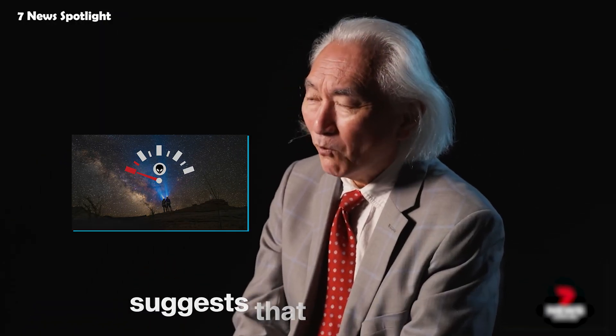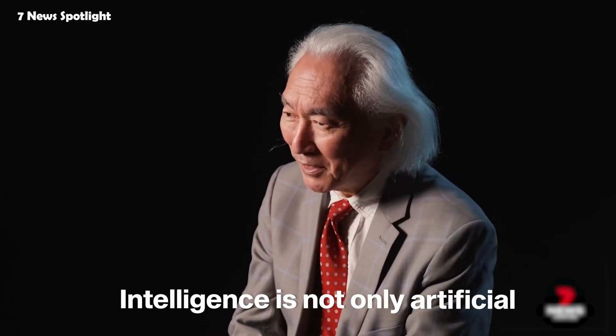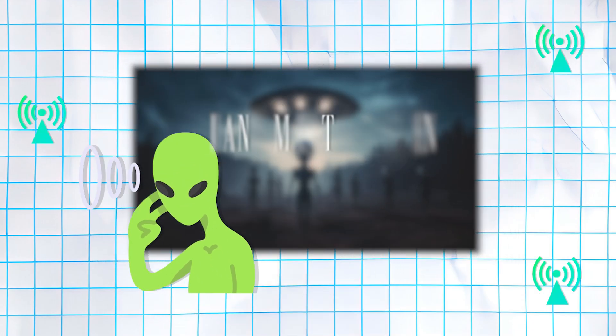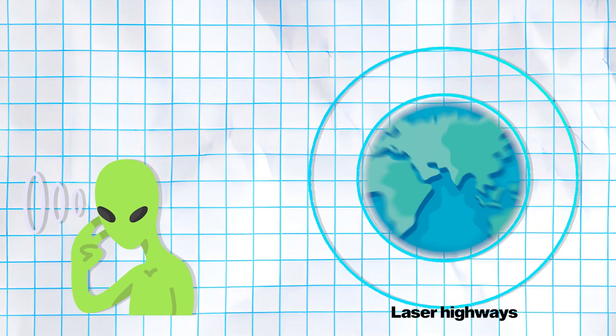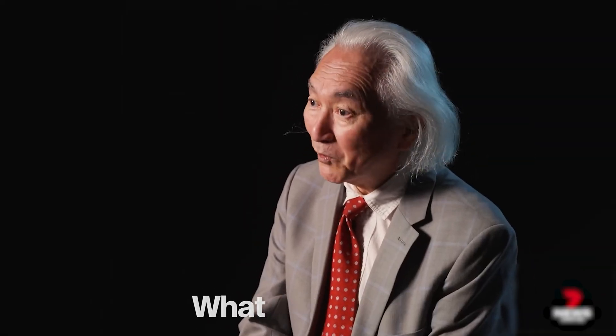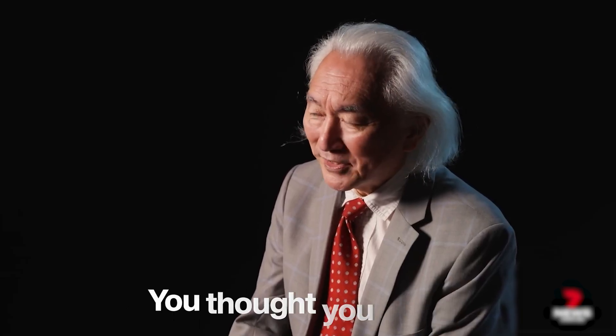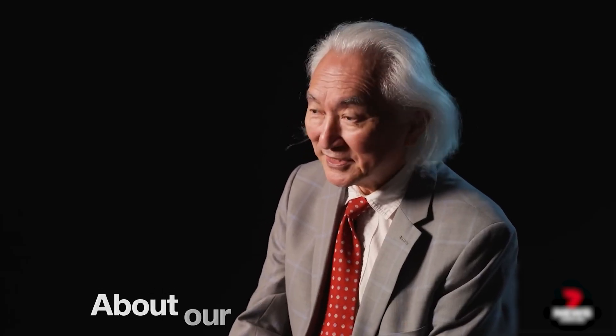Kaku's analysis of the Fermi paradox suggests that extraterrestrial intelligence is not only artificial rather than biological, but these AI civilizations may be communicating through quantum entanglement and laser highways right outside Earth's orbit. We're simply too primitive to detect them. What Kaku said next about humanity's future will challenge everything you thought you knew about our cosmic significance.